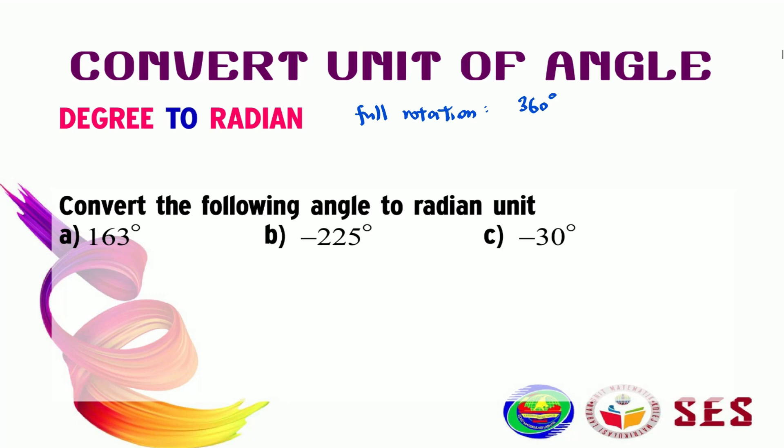On the other hand, in unit radian, a full rotation is 2π radian. That means 360 degrees is equal to 2π radian. And because of that,